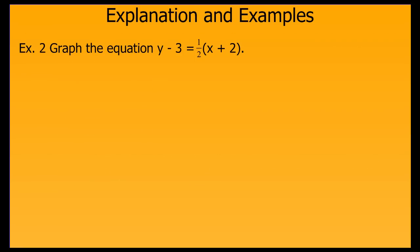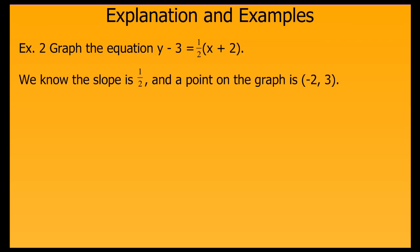Let's try another example. In this case, we're given the equation in point-slope form and asked to graph it. From our formula, we can tell that the slope of our line will be one-half, and a point on the graph will be negative 2, 3. Some students have difficulty remembering how to figure out that point quickly. One way that works for many students is to think about what value of x would make that parentheses equal to 0, and what value of y would make the left side of the equation equal to 0. If you think that through, it's pretty easy to come up with the point negative 2, 3 for this equation.